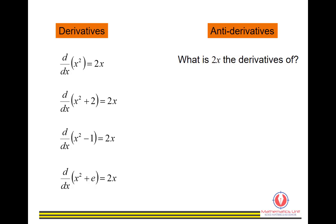What is 2x the derivative of? 2x comes from the derivative of x², or x² + 2, or x² − 1, or x² + e, and so on. So we can write that 2x comes from the derivative of x² + c.